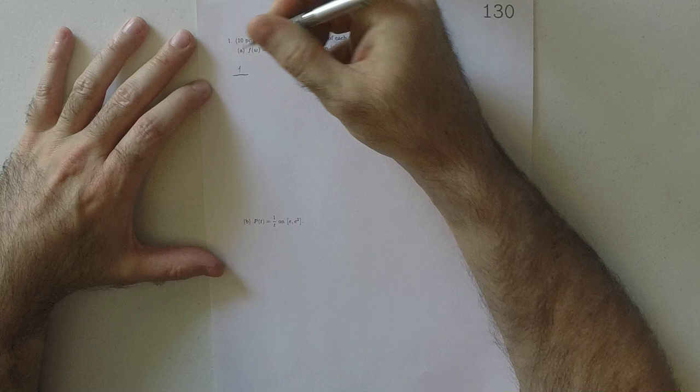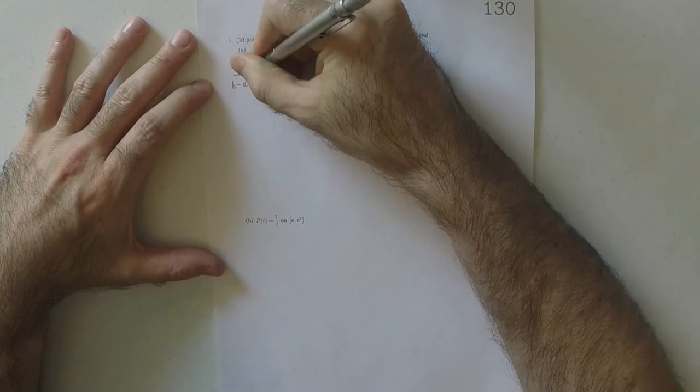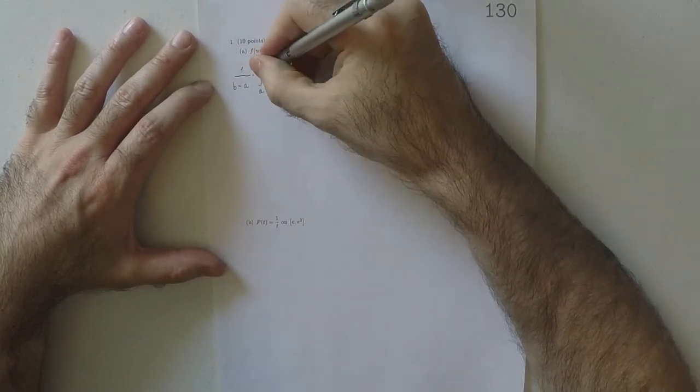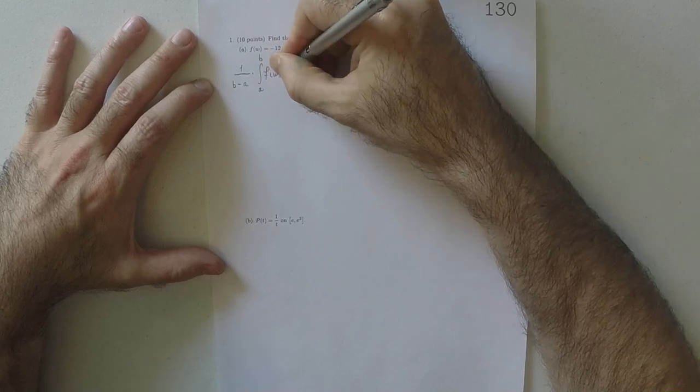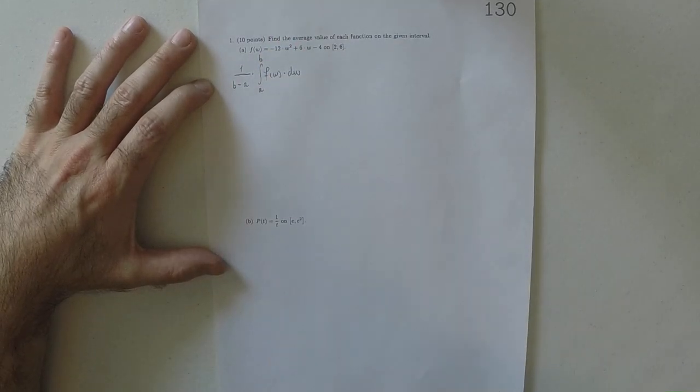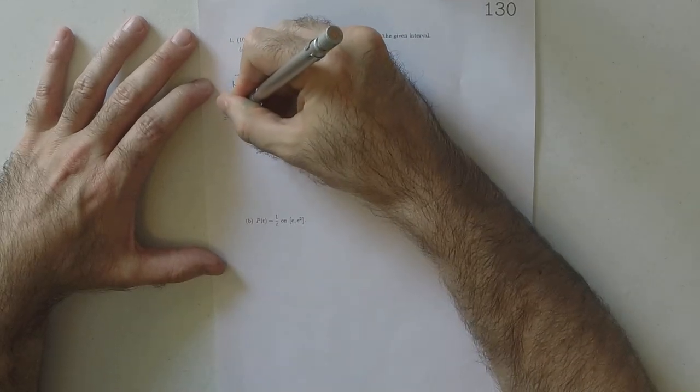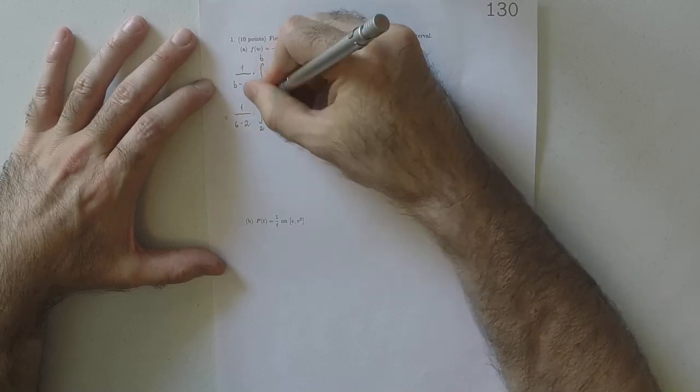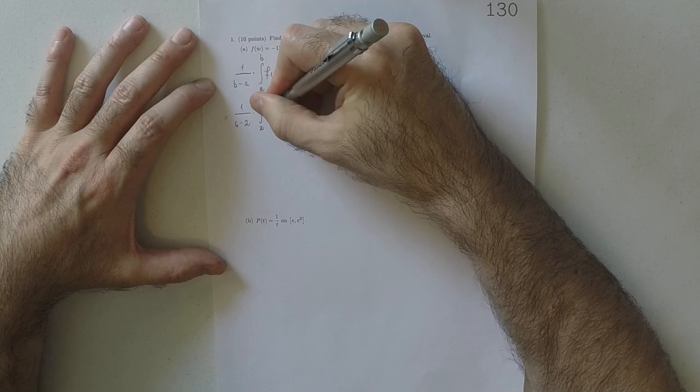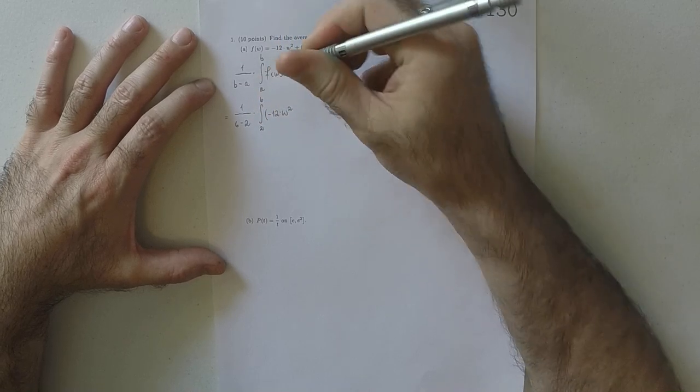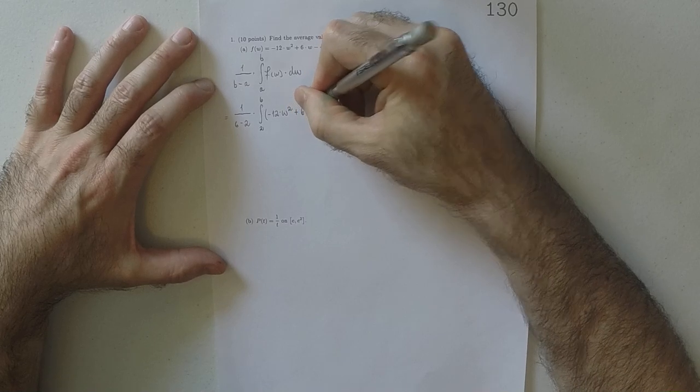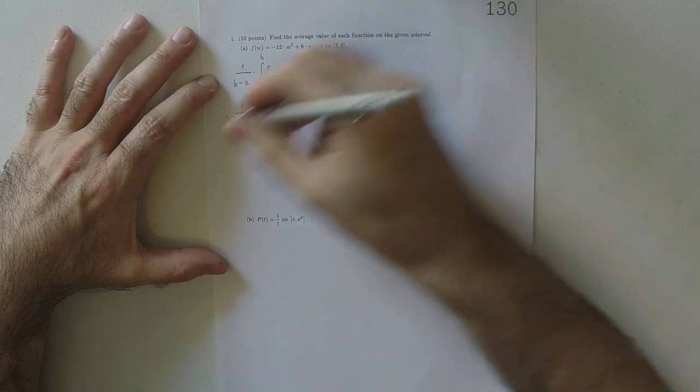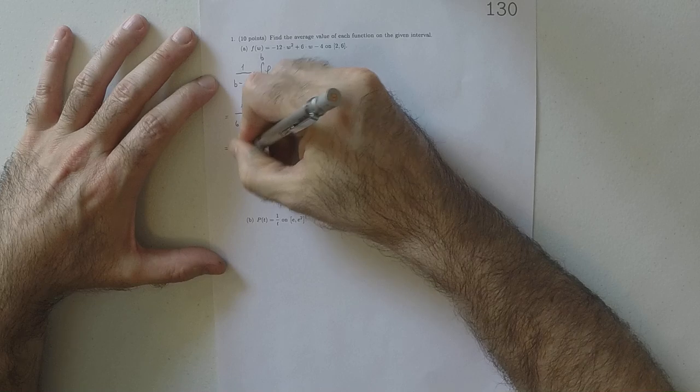so the formula that we need to use is 1 over b minus a integral a to b of f of w, dw. So that's the formula, and on this particular exercise that means 1 over 6 minus 2 integral 2 to 6 of that thing there. So negative 12w squared plus 6w minus 4dw. So that'd be a fourth.